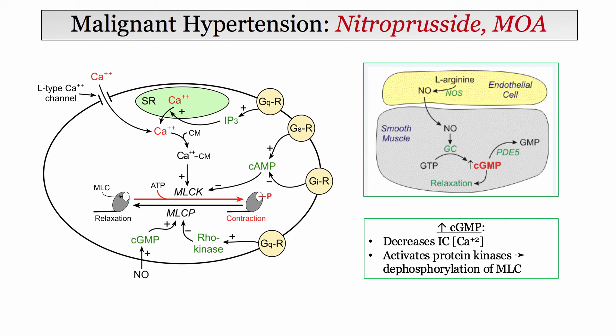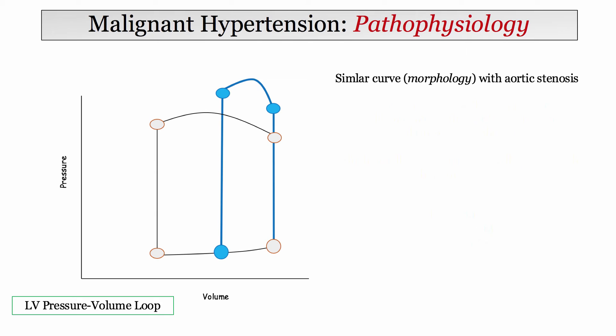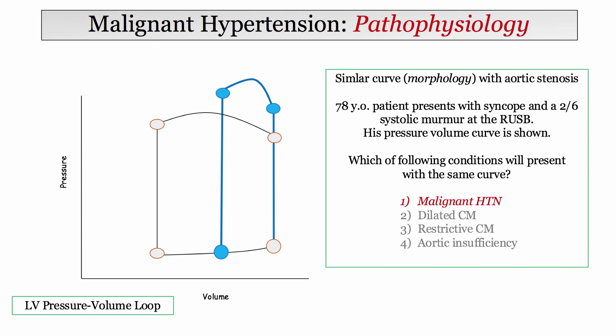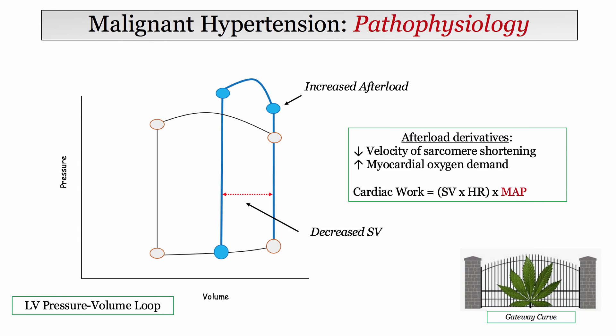This slide serves as a reminder for mechanisms of contraction and relaxation in vascular smooth muscle. The annotated curve has a similar morphology to the aortic stenosis curve — this is the increased afterload curve. A simple derivative: an older patient with syncope and an aortic stenosis murmur has this pressure-volume curve. Which condition will also present with the same curve? Answer: malignant hypertension.